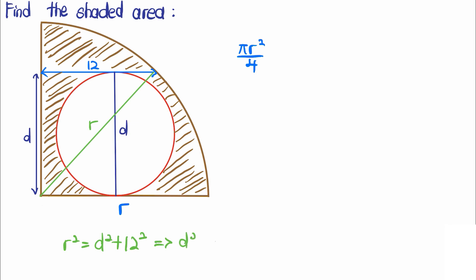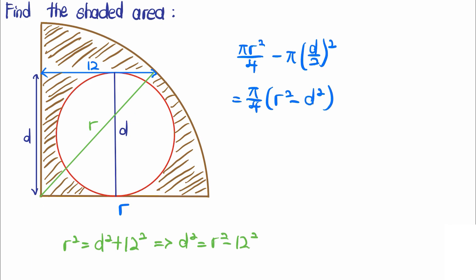Therefore, we get that d² is actually r² minus 12². Now we essentially are able to find an expression for the diameter squared. The area of the circle is actually π times d over 2 squared, which is just π over 4 times r² minus d².